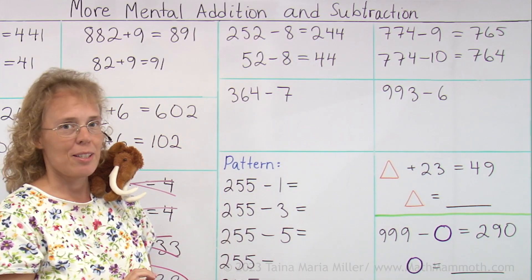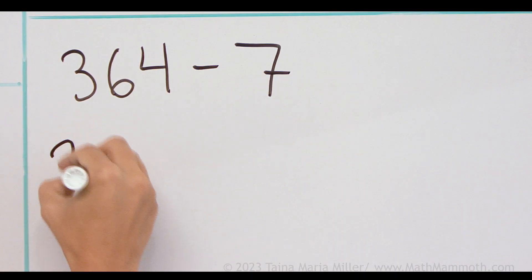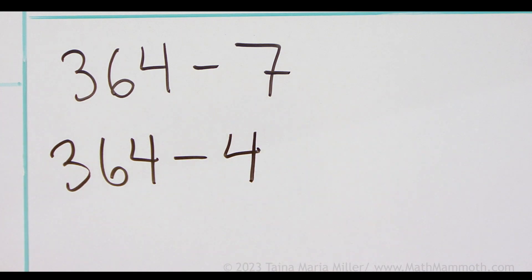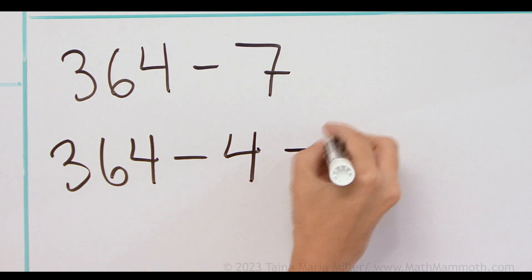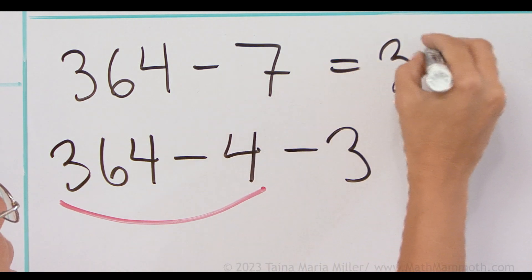364 minus 7. Another way would be to subtract in parts, 364 and subtract so that you will subtract down to the previous 10 and then 3 more. So this here is 360. And then 360 minus 3 is 357.